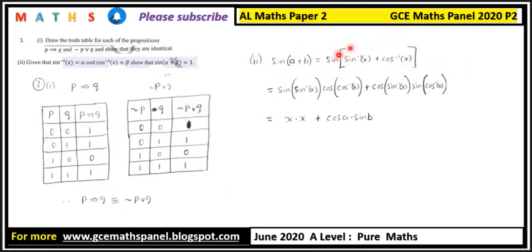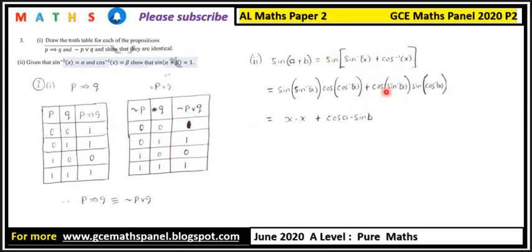The right-hand side can be simplified using the sine addition formula. We have two angles here: sine inverse of x and cosine inverse of x. Expanding gives us sine(sine⁻¹x) · cos(cos⁻¹x) plus cos(sin⁻¹x) · sin(cos⁻¹x).